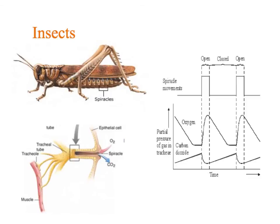As you can see from this graph, spiracles in insects are closed most of the time - to reduce water loss. Any organism that lives on land is going to struggle with conserving water. It's only when carbon dioxide levels reach a certain point that the spiracles open, to allow the carbon dioxide to diffuse out, and this allows more oxygen to diffuse into the insect.